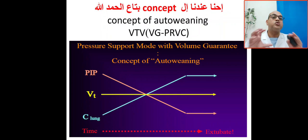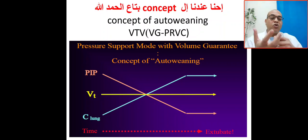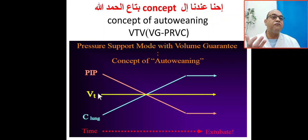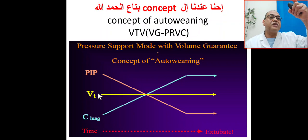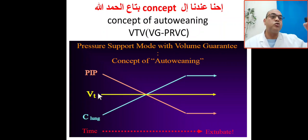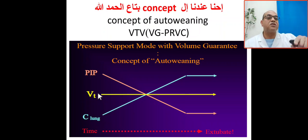In summary, the concept of auto-weaning: it will prevent barotrauma — because BIP prevents barotrauma — and tidal volume control prevents volutrauma. So it will prevent barotrauma, volutrauma, and for sure biotrauma, which is the inflammatory process. So it will prevent ventilation-induced lung injury, ventilation-associated lung injury, and physician-associated lung injury.